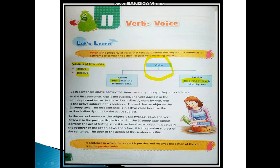The first sentence is in the active voice because the action is directly done by the active subject. Rita is the active subject and she is performing the action, so it is in active voice.